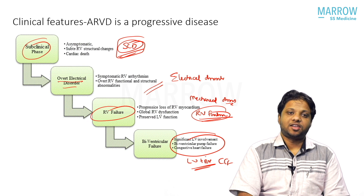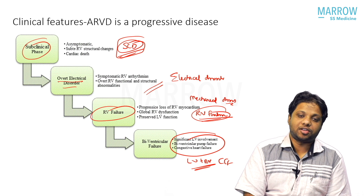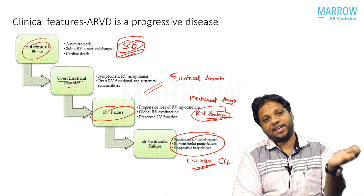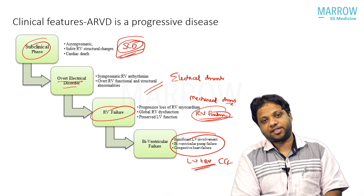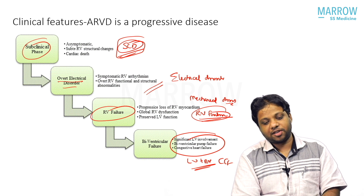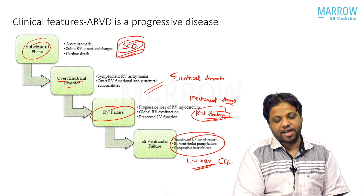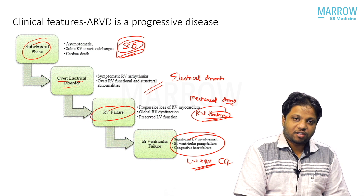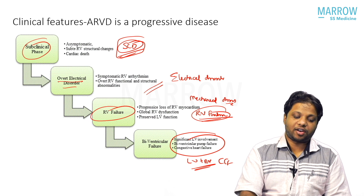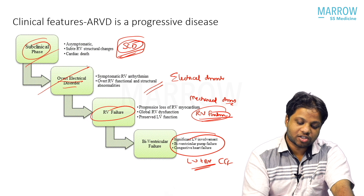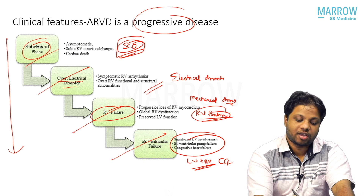To summarize the classical progression of ARVD: stage one is the subclinical phase — difficult to detect, but sudden cardiac death is possible. Stage two is an electrical disorder with palpitations, syncope, or sudden cardiac death from RV arrhythmias. Stage three is RV failure with elevated JVP, peripheral edema, ascites, RV dysfunction, and RV aneurysms on echo, with preserved LV function. Stage four is biventricular failure. ARVD is a progressive disease — it does not remain at one stage.